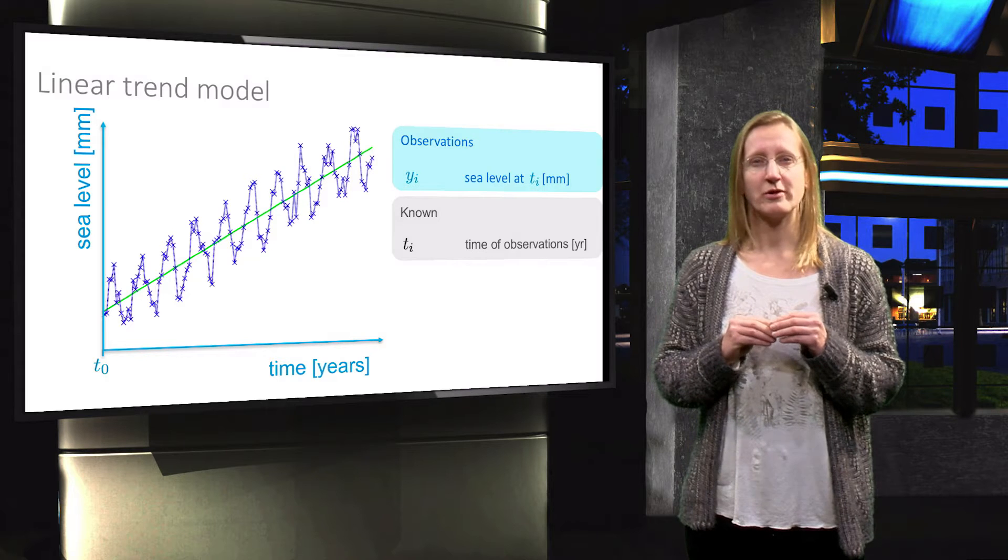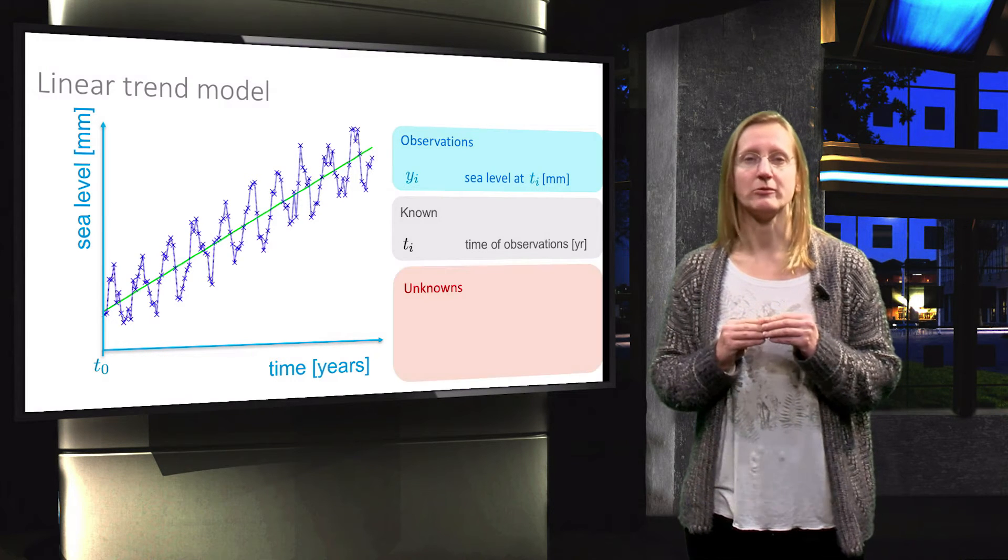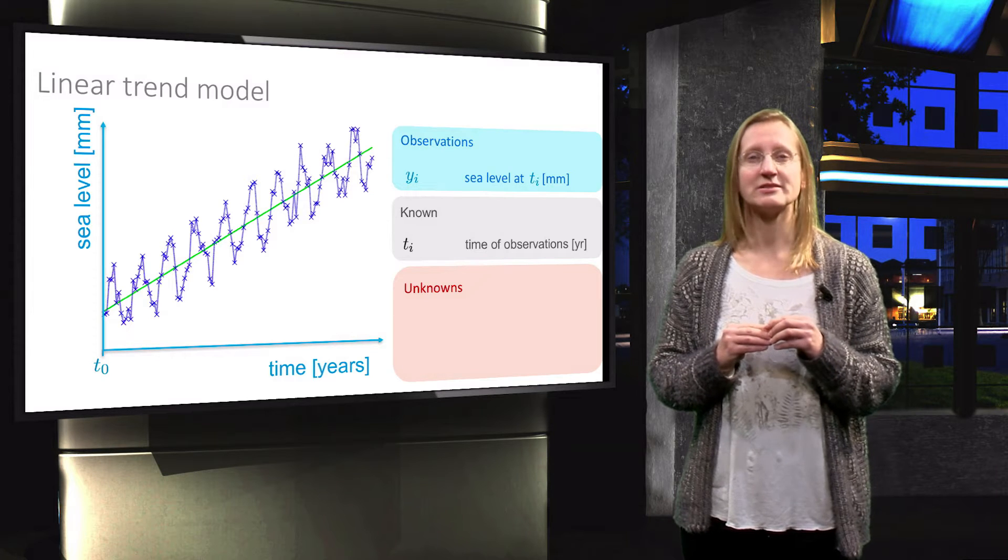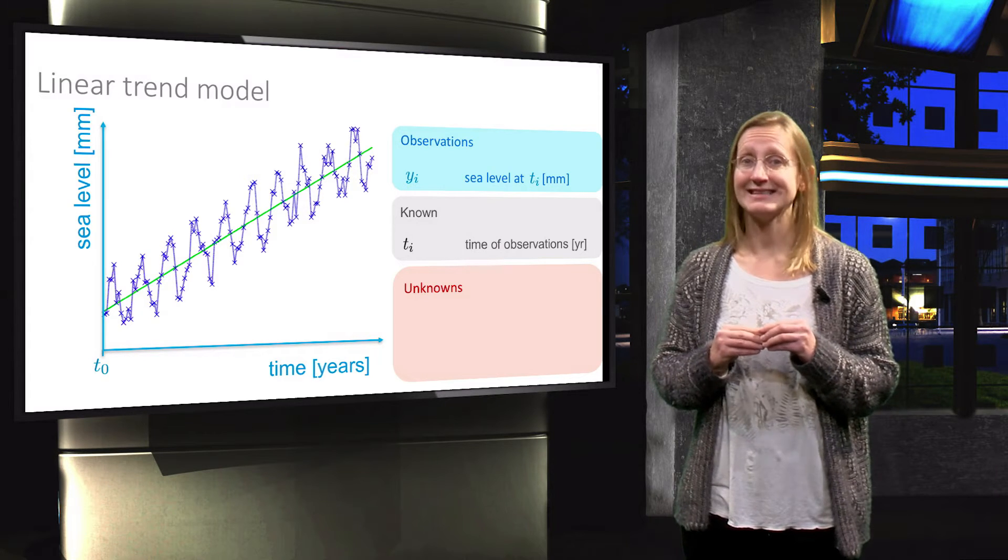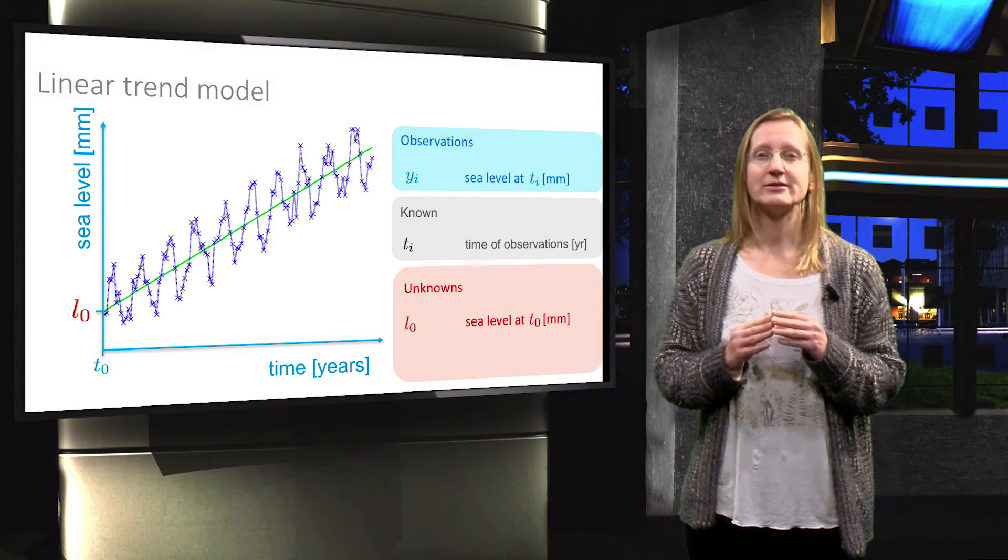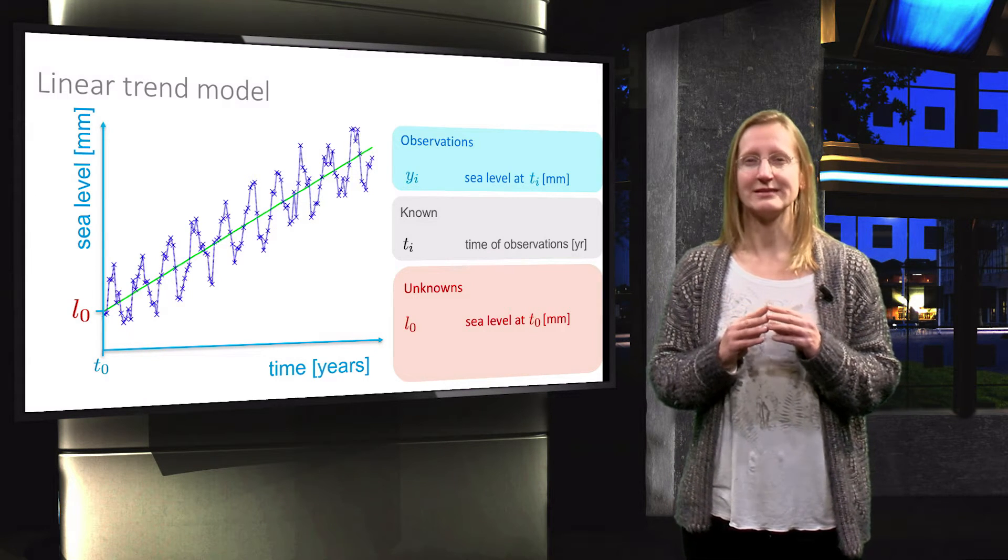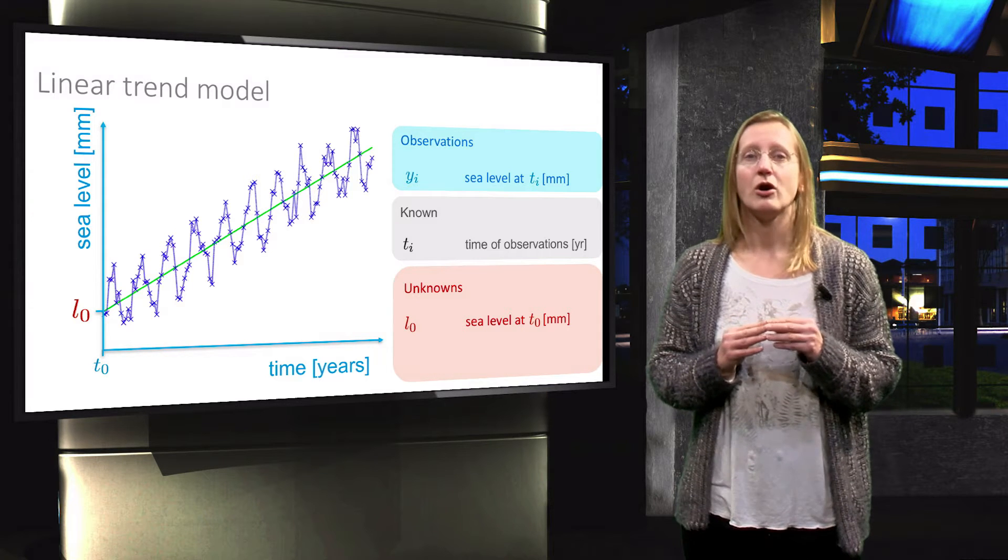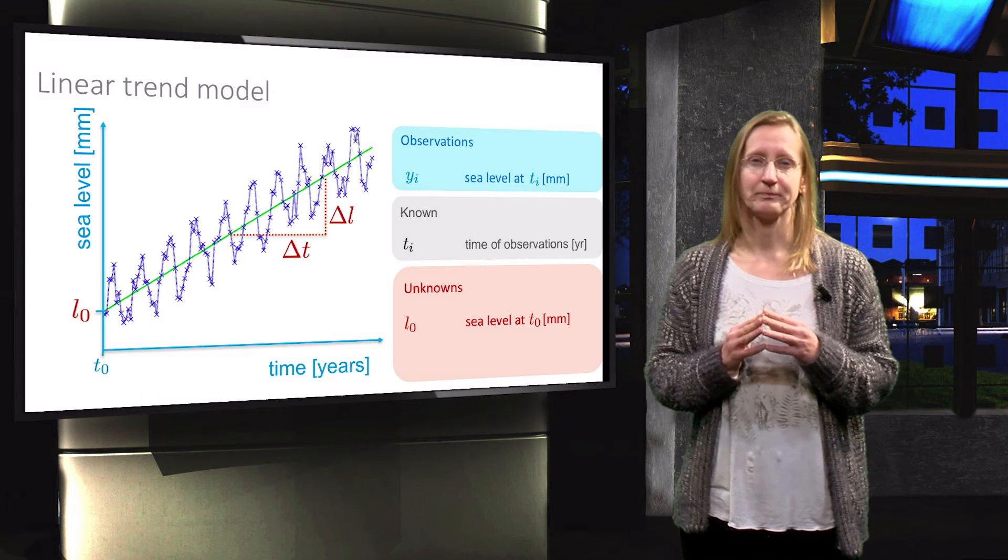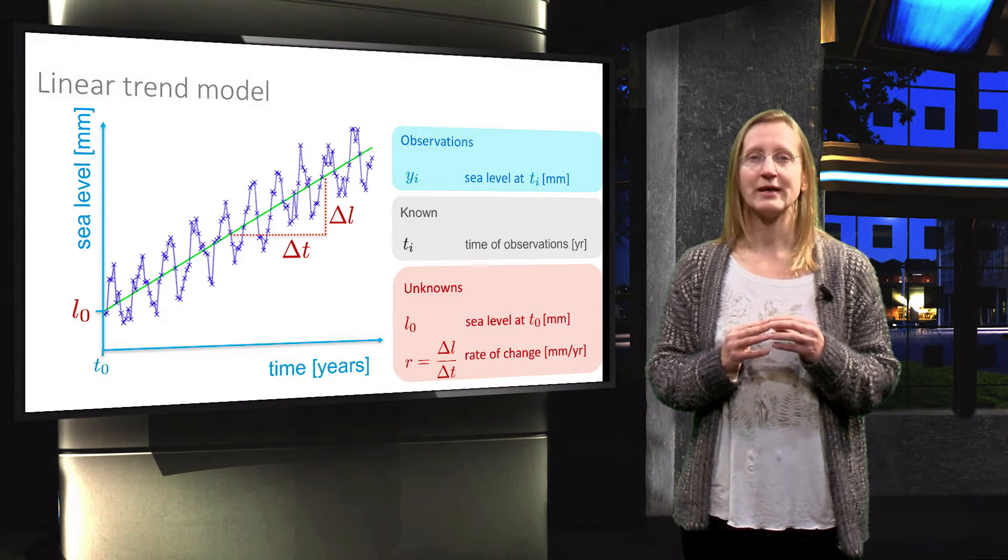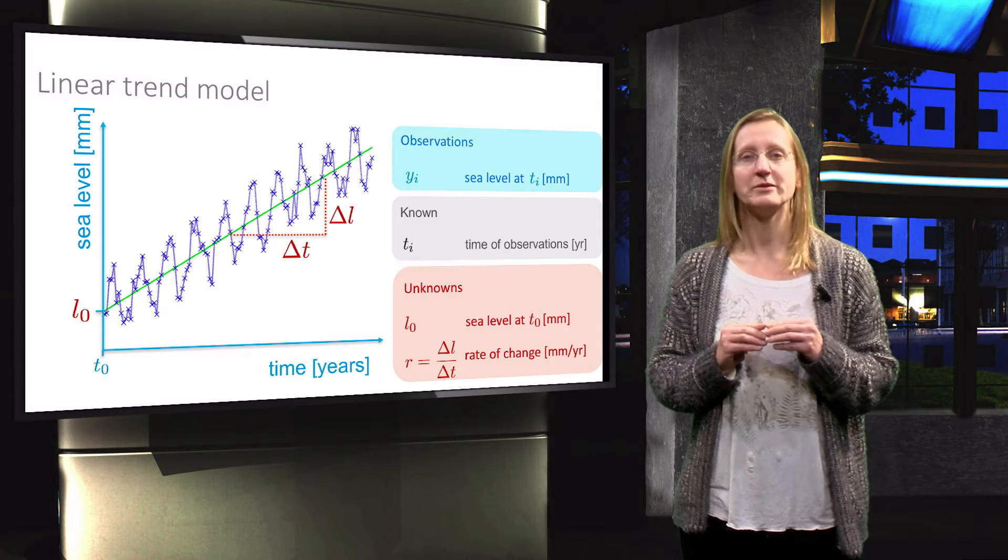What are then the unknown parameters for this linear trend model? Firstly, one unknown is the initial sea level at T0, as indicated along the vertical axis. Secondly, the parameter that we are really interested in, namely the change of sea level, delta L, over a certain time interval. We will call this the rate of change, R, and it is expressed in millimeters per year.